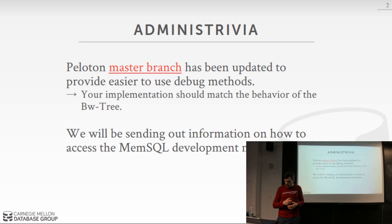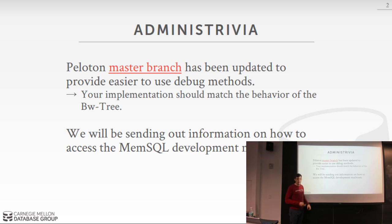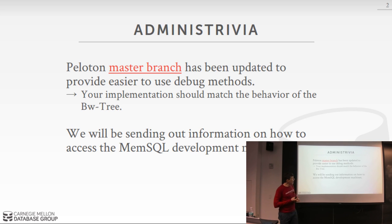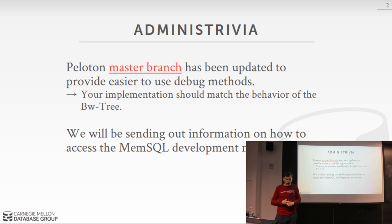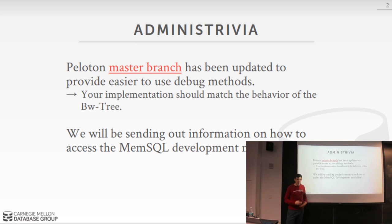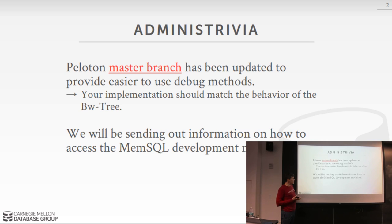For project number two, we merged some code yesterday into the master branch to make it easier to debug the contents of your index. We added helper methods to print out the keys and values. There's no single utility method where you throw in a pointer to your index and it prints a nice table, because some indexes like ART don't actually expose what keys they have. In your skip list, you'll want to add debug methods for your own implementation.